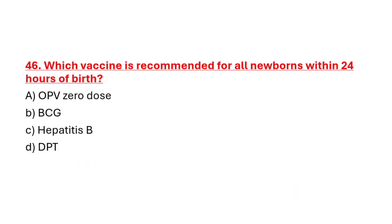Question 46: Which vaccine is recommended for all newborns within 24 hours of birth? Option A: OPV zero dose. Option B: BCG. Option C: Hepatitis B. Option D: TPT. Correct answer is Option C: Hepatitis B.